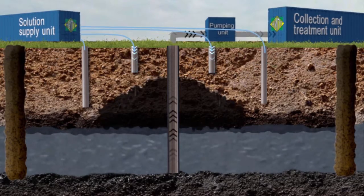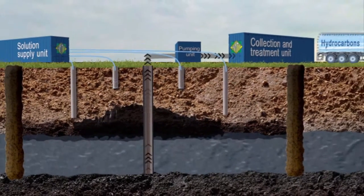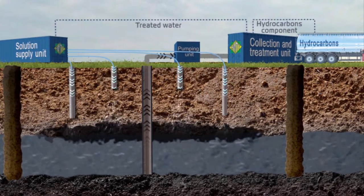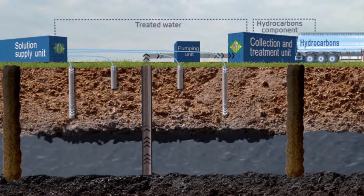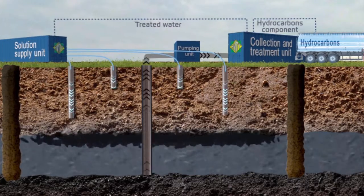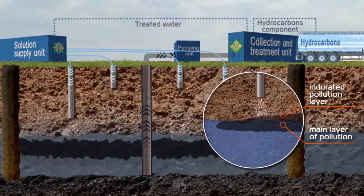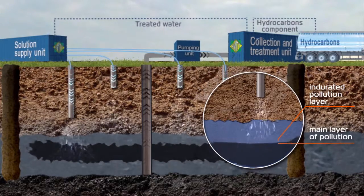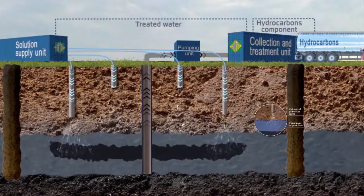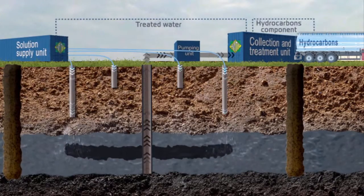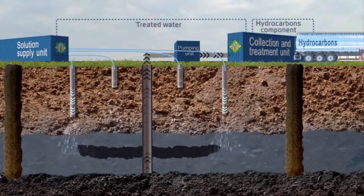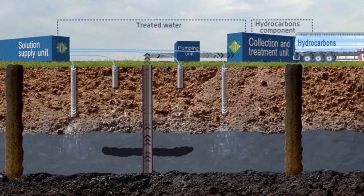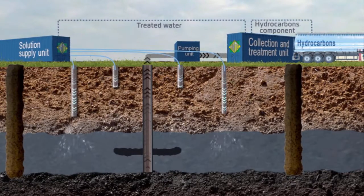Washing solution is inserted into the system of subsurface injection wells. The cleaning of the surface soil and elimination of the gas form of the pollution then takes place. After that, the washing solution is introduced into the system of deep-level injection wells, precipitating the washing out of the indurated contamination layer, followed by washing out of the main contamination layer.